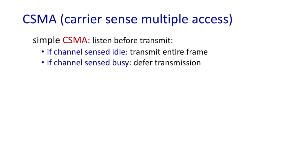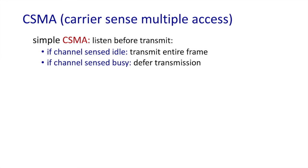Another class of random access protocols, carrier sense multiple access or CSMA, can overcome these inefficiencies. An ALOHA sender is like an impolite conversationalist — you've got something to say, you just say it. CSMA protocols are more polite: they listen before they speak. In simple CSMA, you sense the channel; if it's idle, you transmit the entire frame. If the channel is sensed busy, you don't transmit — you defer randomly until a later point in time, sometimes called random backoff. An even more polite version is CSMA with collision detection, CSMA/CD. In CSMA/CD, you never speak when others are speaking, but if a collision does occur, it's detected quickly and transmission is aborted, reducing channel wastage.